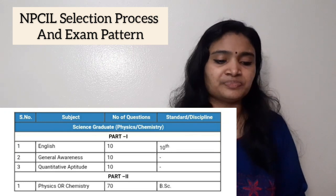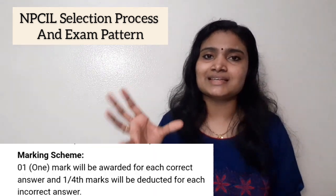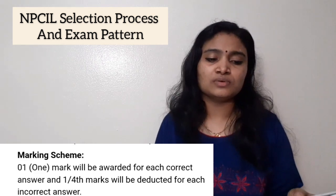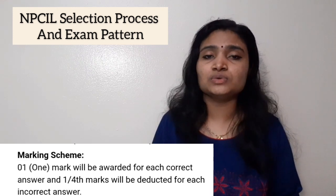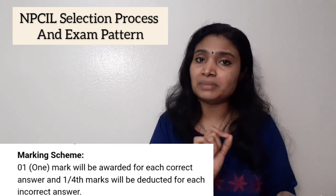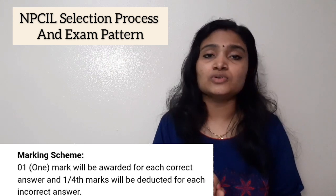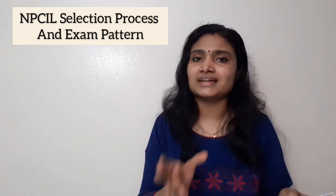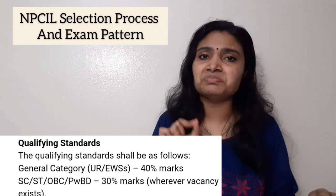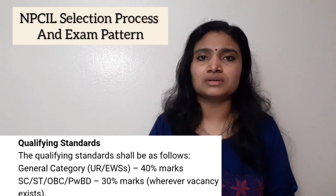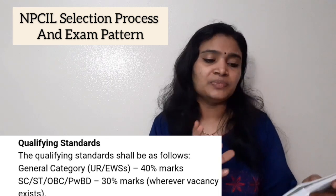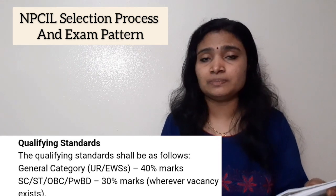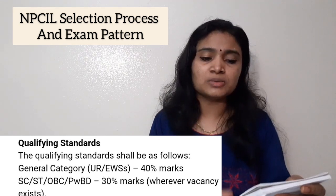Next is the marking scheme. One mark is given for all correct answers and there is a negative marking of minus one-fourth mark deducted for all incorrect answers. They have also given the qualifying percentage for the written examination: for the general category you require 40% marks in the written exam, whether you are writing for diploma or science graduate stipendiary trainee. For SC, ST, OBC, and disabled people, you require only 30% marks to qualify.